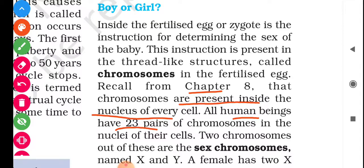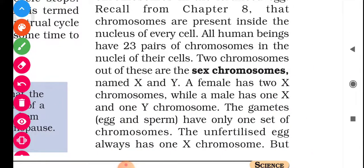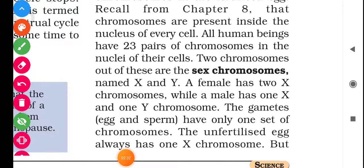All human beings have 23 pairs of chromosomes in the nuclei of their cells — that is, 46 chromosomes in total. Two of these chromosomes are the sex chromosomes, named X and Y. A female has two X chromosomes, while a male has one X and one Y chromosome.